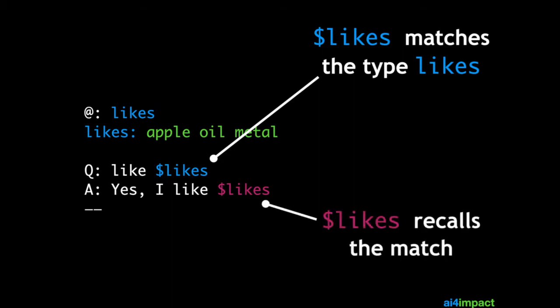And likes used again in the answer recalls that match. So likes is a type reference. It's called a type reference because it has the same name as a type.